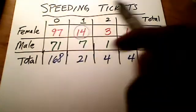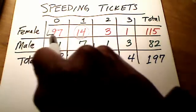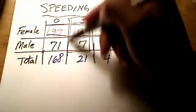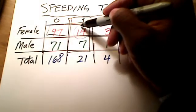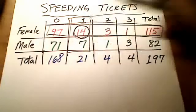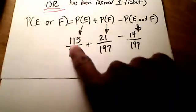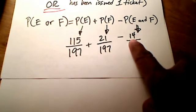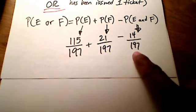That is where this row, this top row, and this column overlap - right here at that 14. So we're going to take away that overlap. If you work this out on your calculator - add 115 to 21, take away 14, and divide by 197 - that comes out to be 122 over 197.